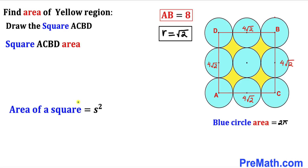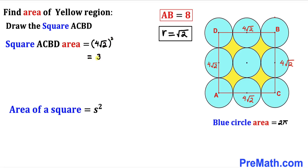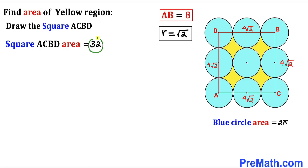Recalling the area of a square formula: Area equals s squared, where s is the side length. In our case the side length is 4√2, so the area of square ACBD is (4√2) squared. Simplifying the right-hand side gives us 32. Thus the area of square ACBD turns out to be 32.